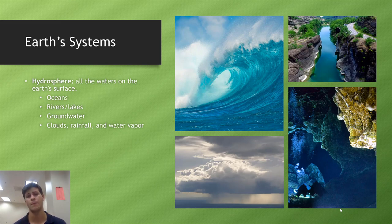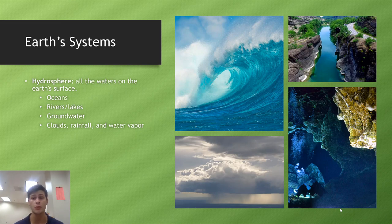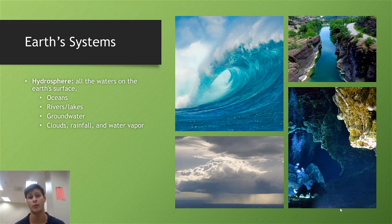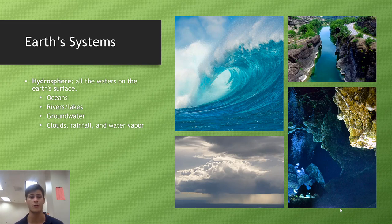Next, we should talk about the hydrosphere. The hydrosphere refers to all of the waters on Earth's surface — things such as the ocean, lakes or rivers, groundwater, something we talked about when we were looking at ecosystem services, and even water vapor in the atmosphere.